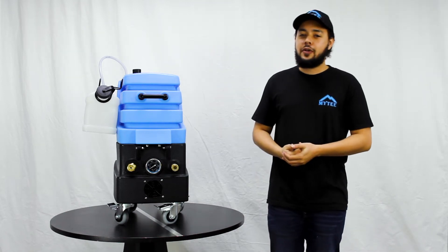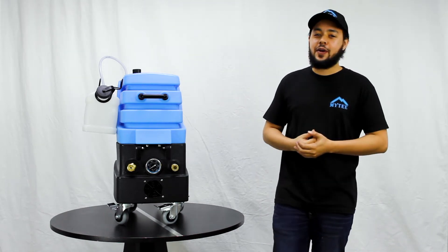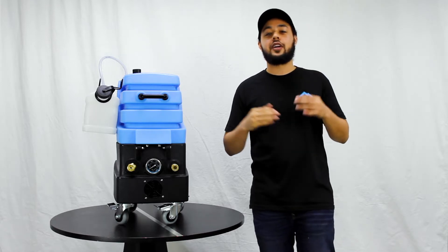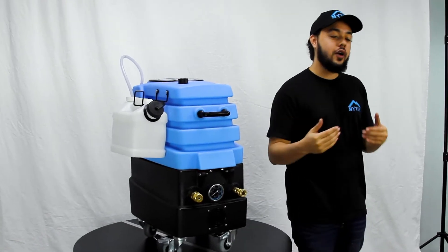Hey everybody, welcome back to another episode of Out of the Box with Mighty Products. My name is Austin. Today we're going to be talking about the 7304 Waterhog.